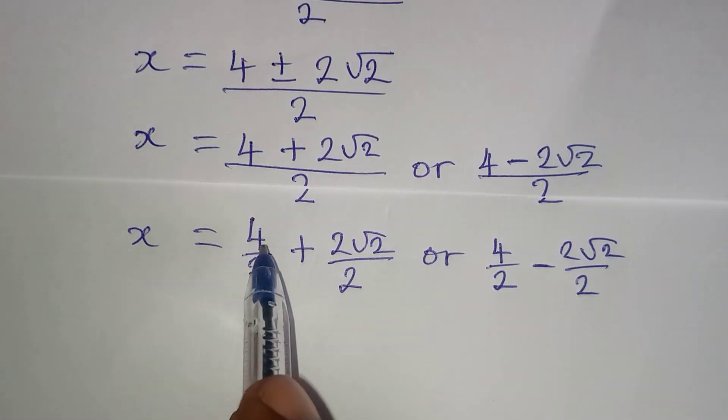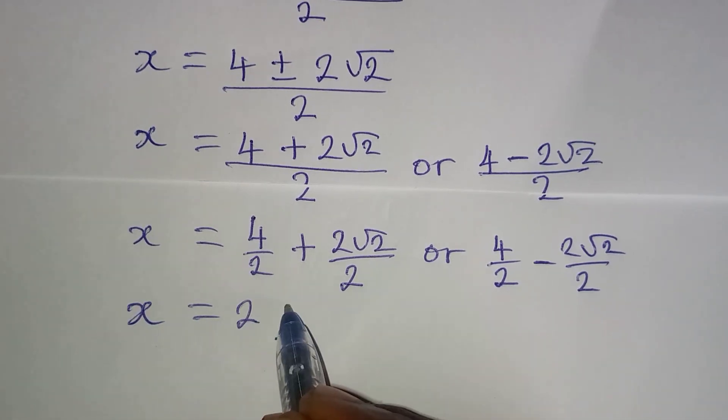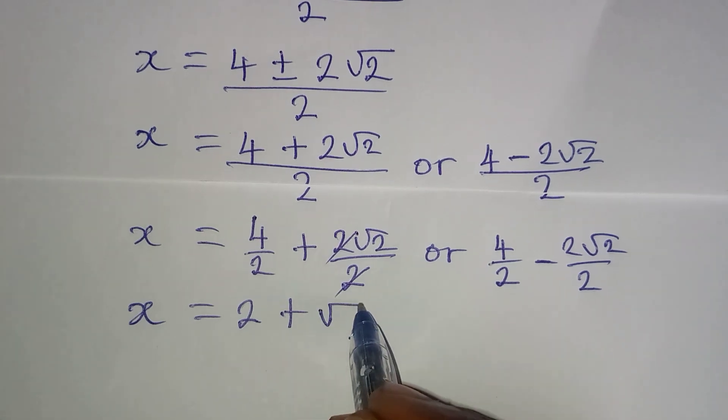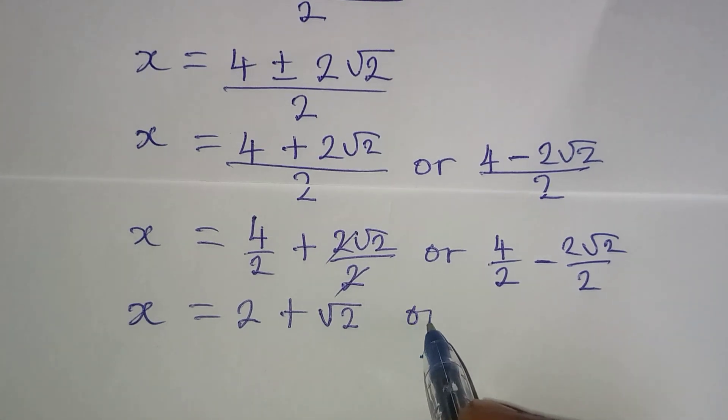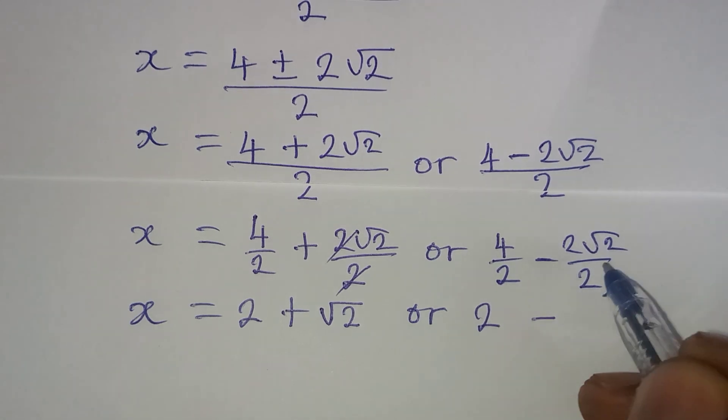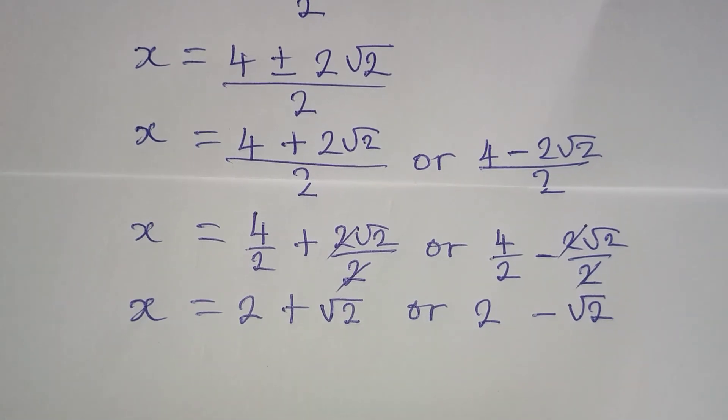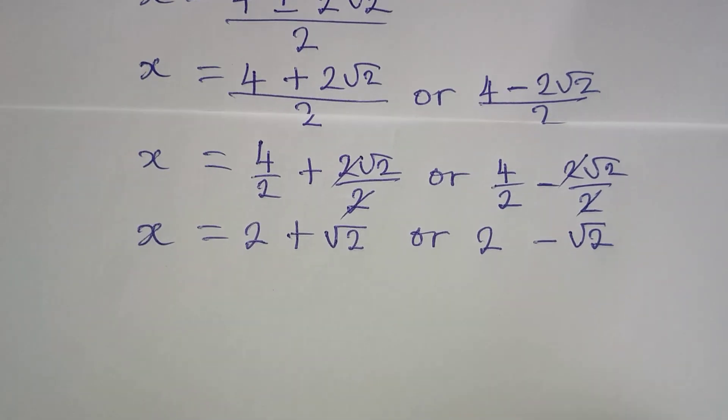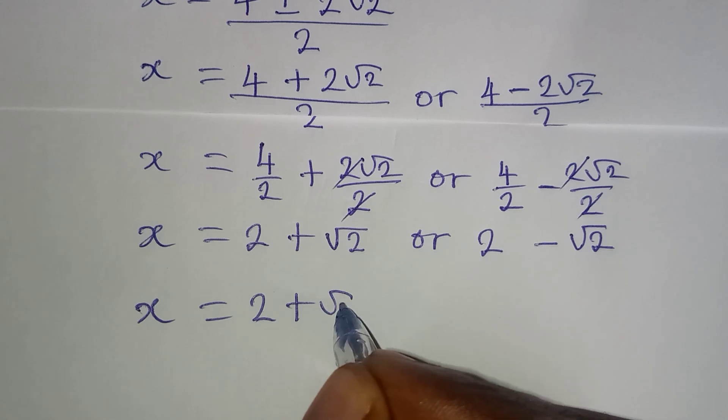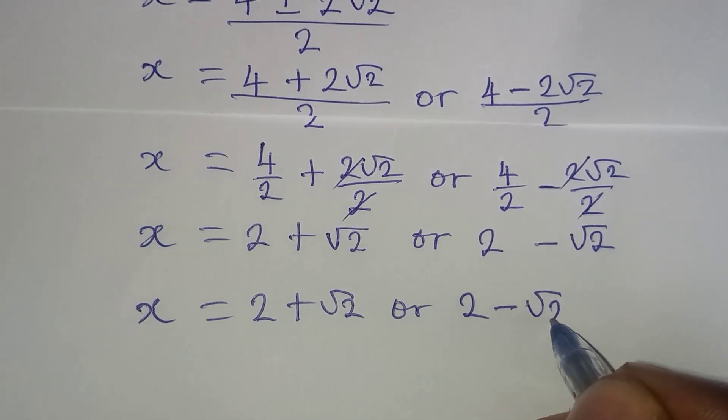Then from here, I will take a step further. x will be equal to 4 over 2 is 2. Then plus, this can cancel this, so I have root 2. So what are we now saying? We are saying that x is equal to 2 plus root 2 or 2 minus root 2.